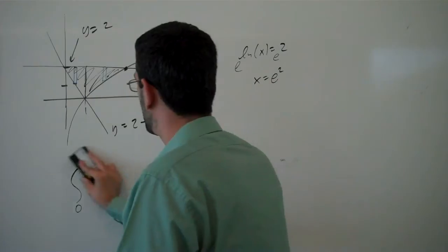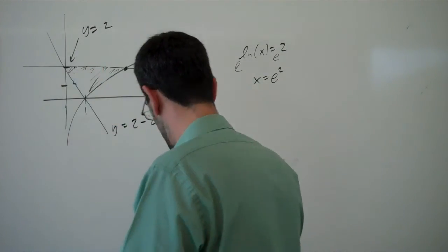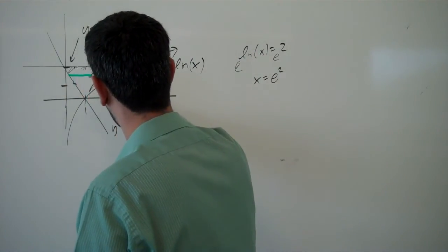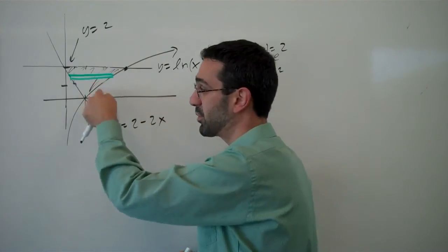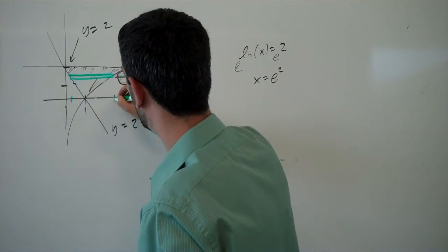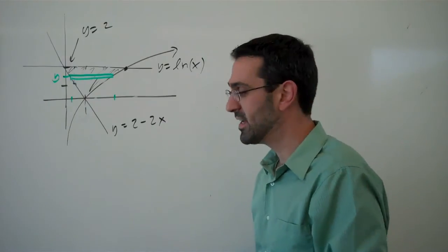So if we tried slicing horizontally here, then a slice would go between the line and the log function everywhere over this region. And so we need to know what this x value is and that x value is given the y.